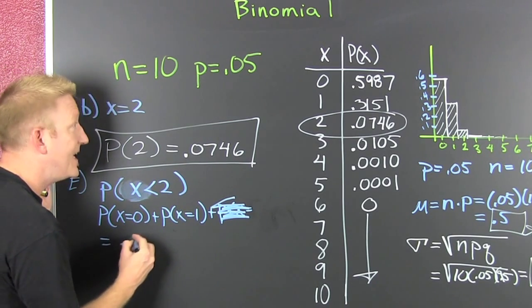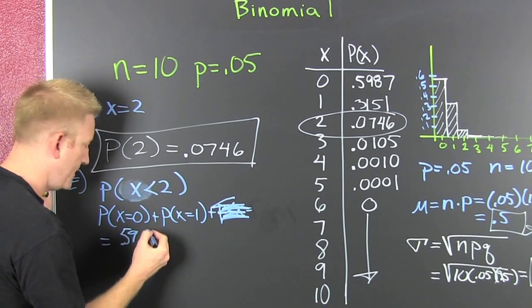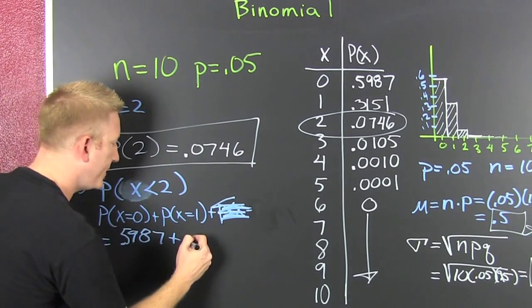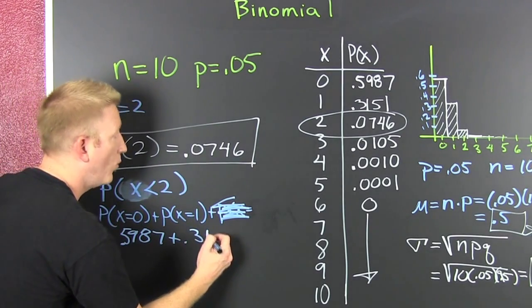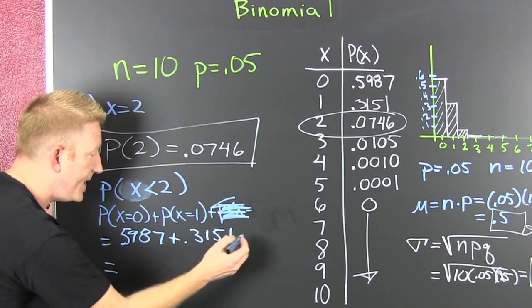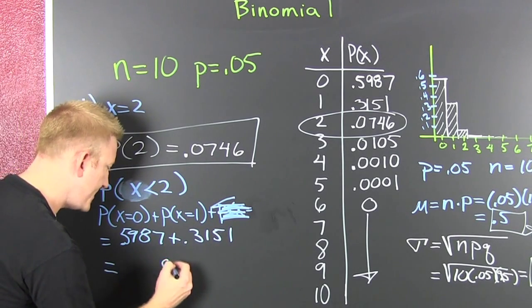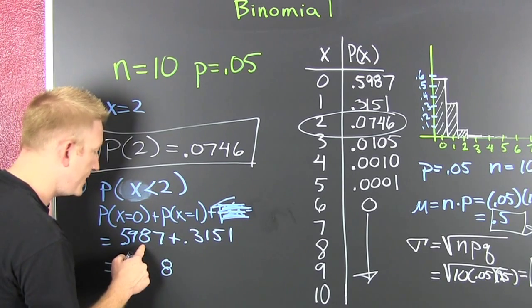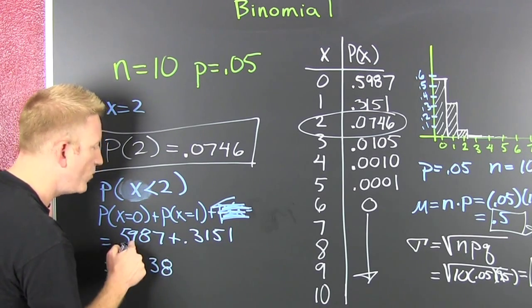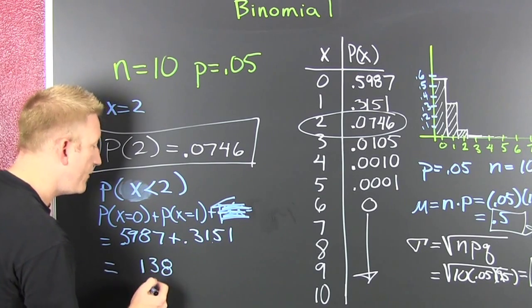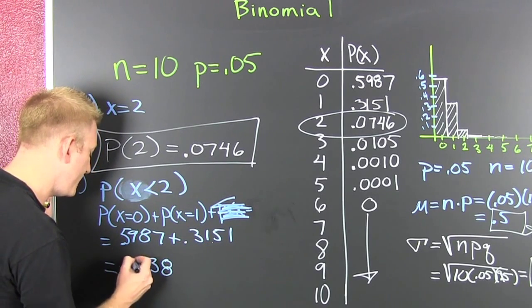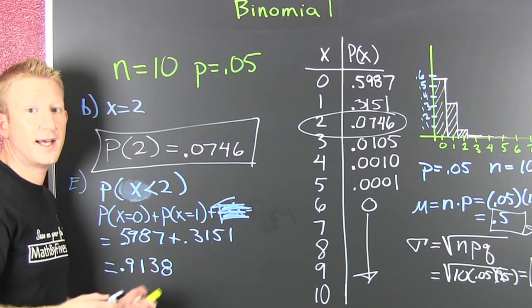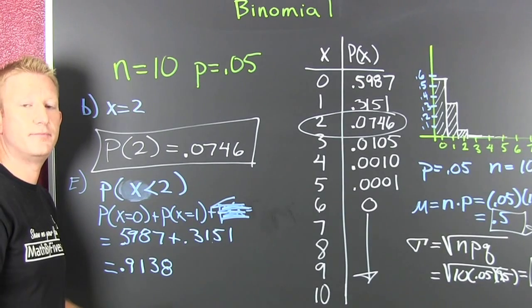So, I take .5987 and I add it to .3151, and then, Adam, this is an 8, great. 5 plus 8 is 13, carry a 1, it's okay, they're not heavy. 9 and 1 is 10, and 1 is 11, carry a 1, it's okay, it's not heavy. There's a 91% chance that less than two of those calculators are coming back.